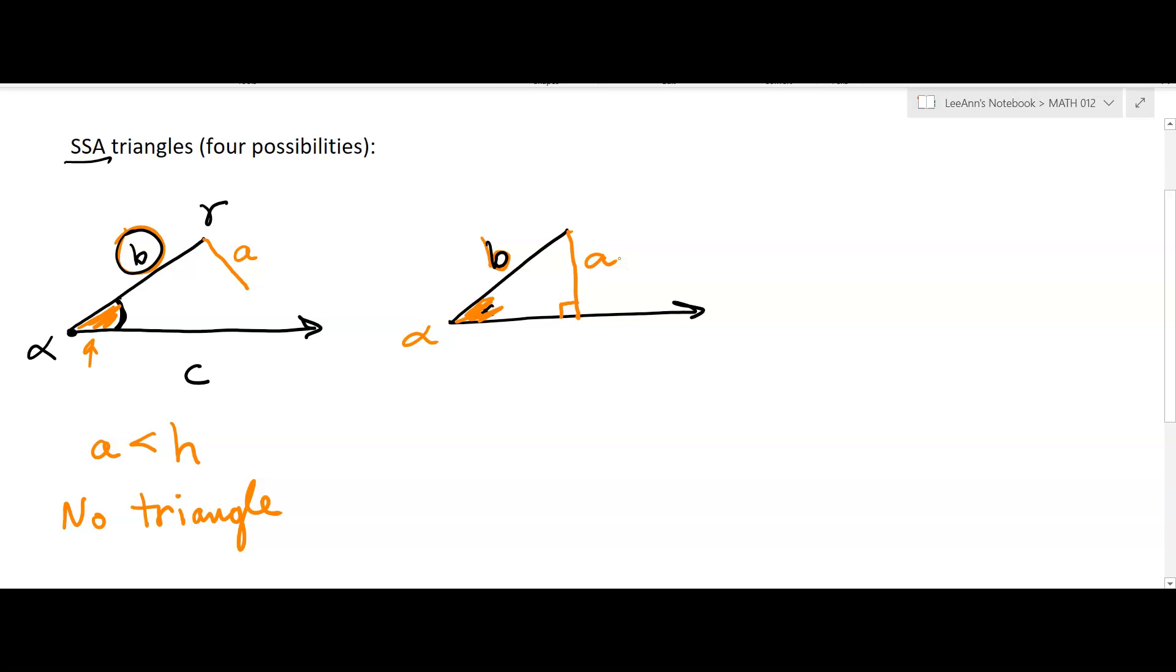So you get one triangle, and a is actually equal to the height, and in this case, you get one right triangle. All right, so that could happen. I have to go through all the possibilities.